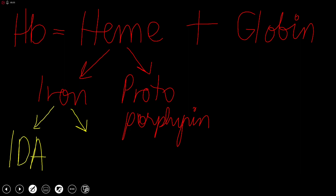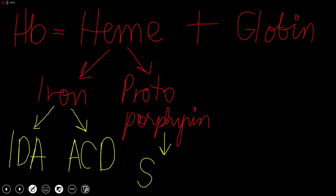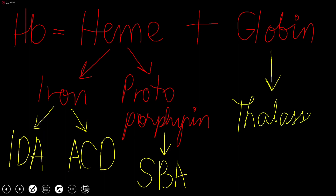If iron is present but you cannot use it properly — meaning defective utilization — then you will develop anemia of chronic disease, now known as anemia of chronic inflammation. If the problem is in the protoporphyrin molecule, then we will have sideroblastic anemia. And finally, if heme is okay but globin chains are missing or decreased in concentration, then we are referring to the thalassemias.